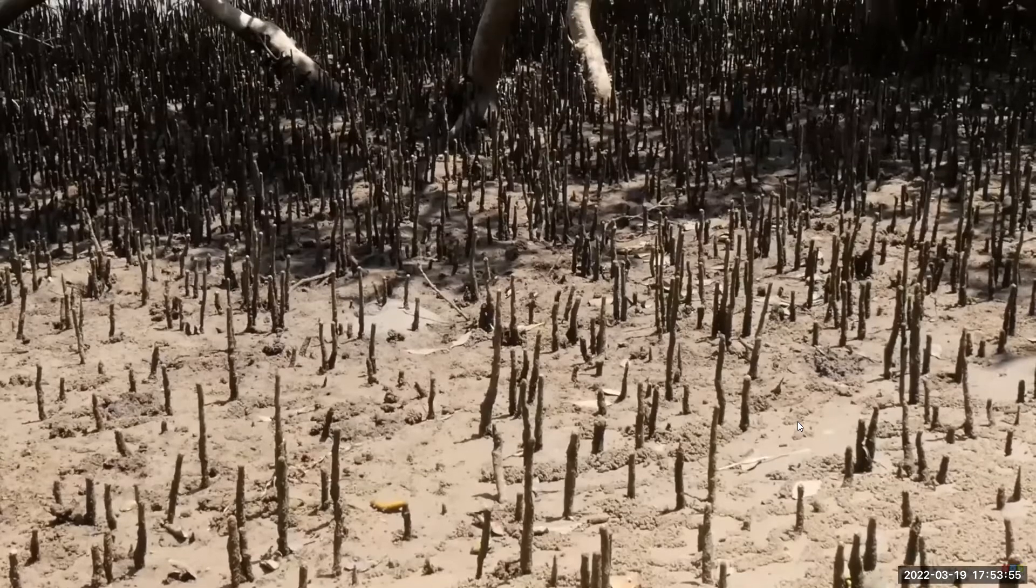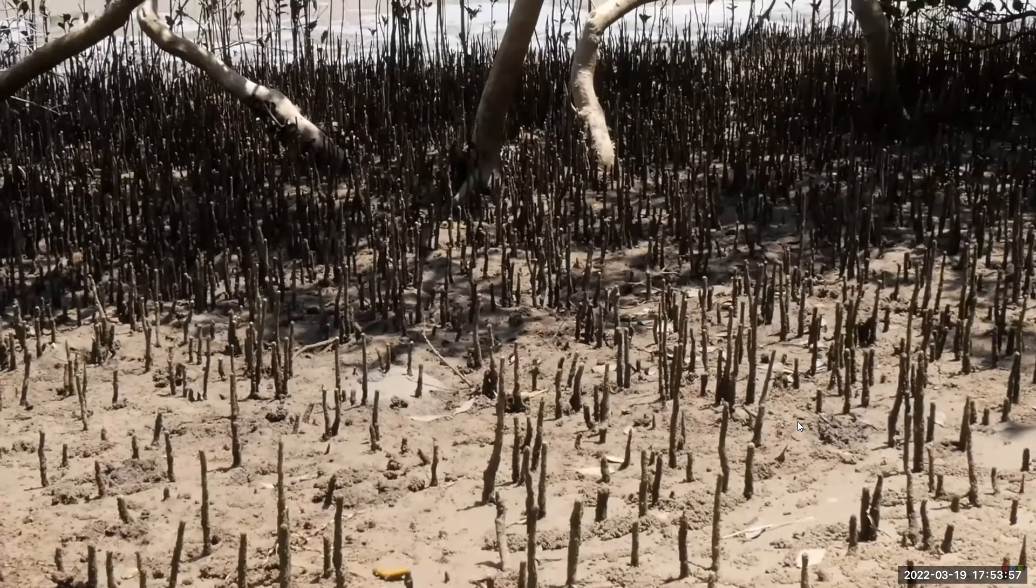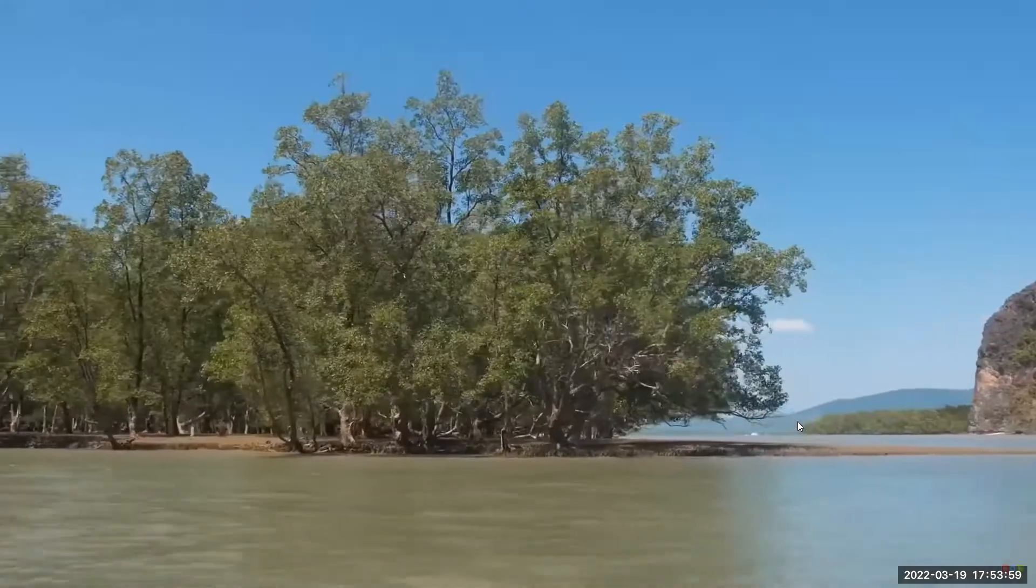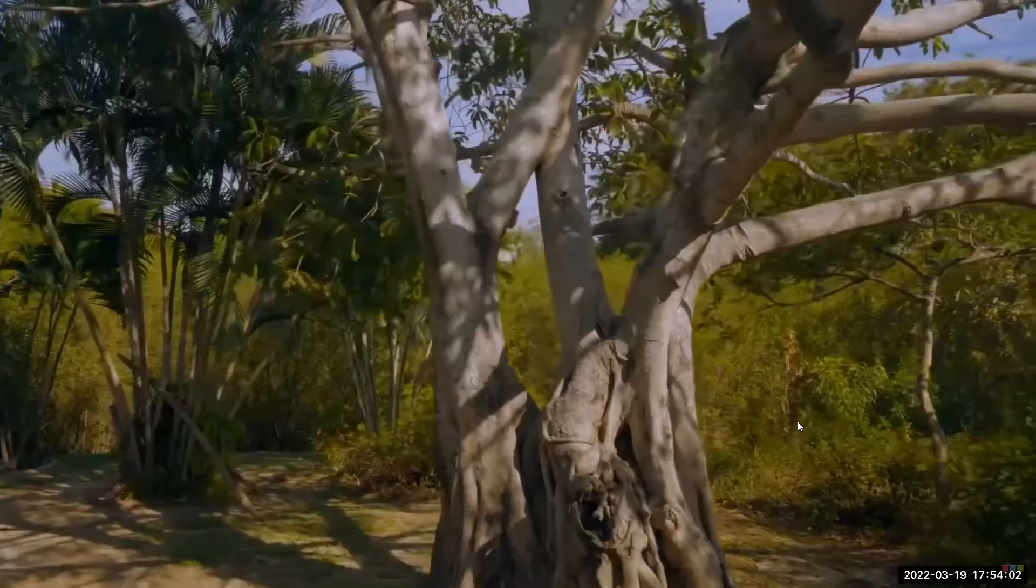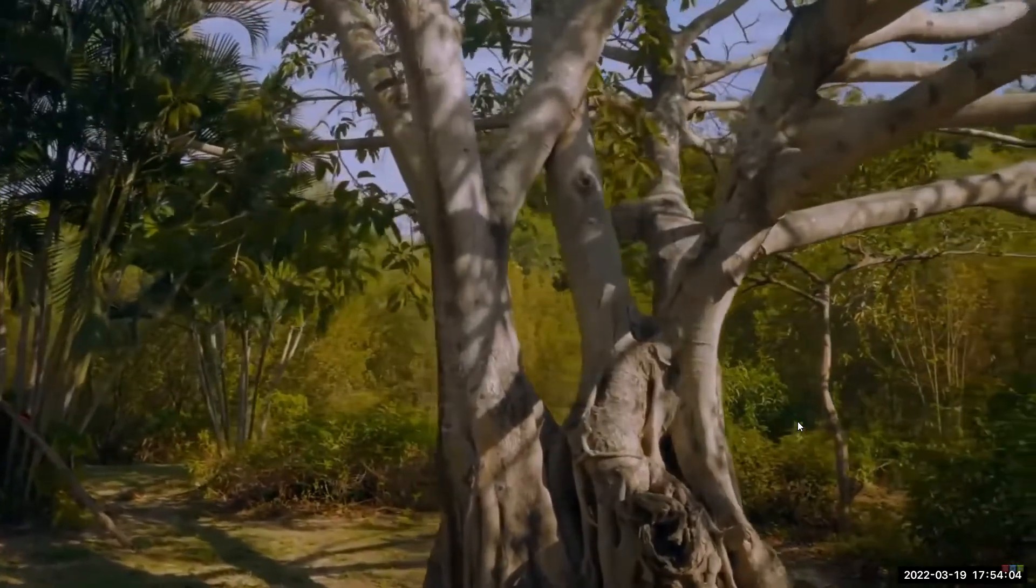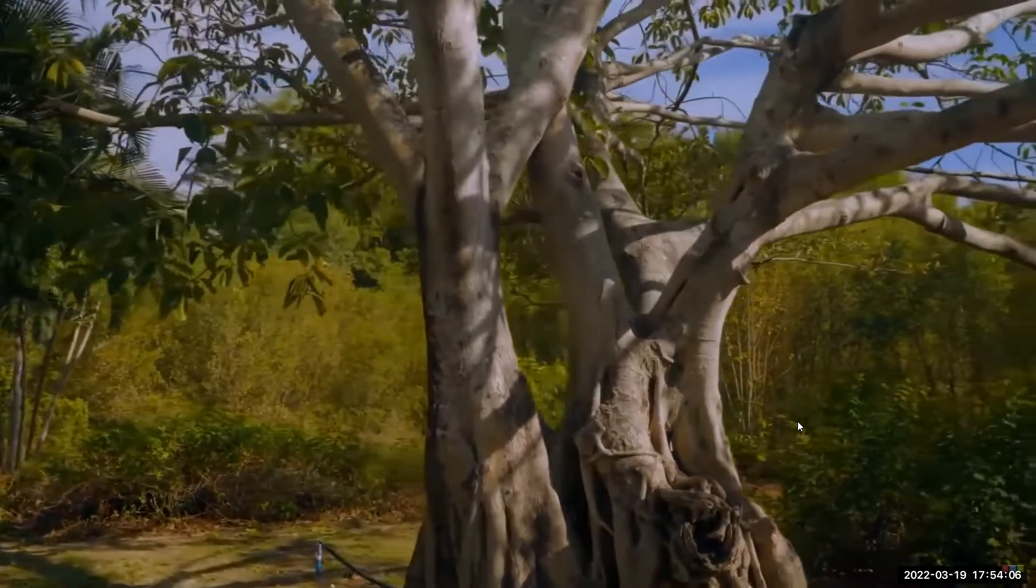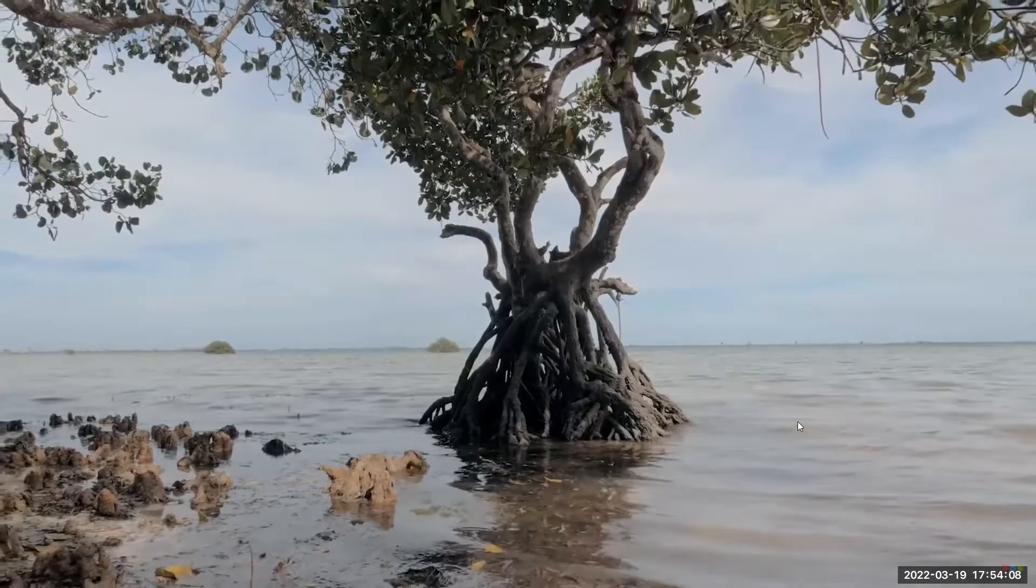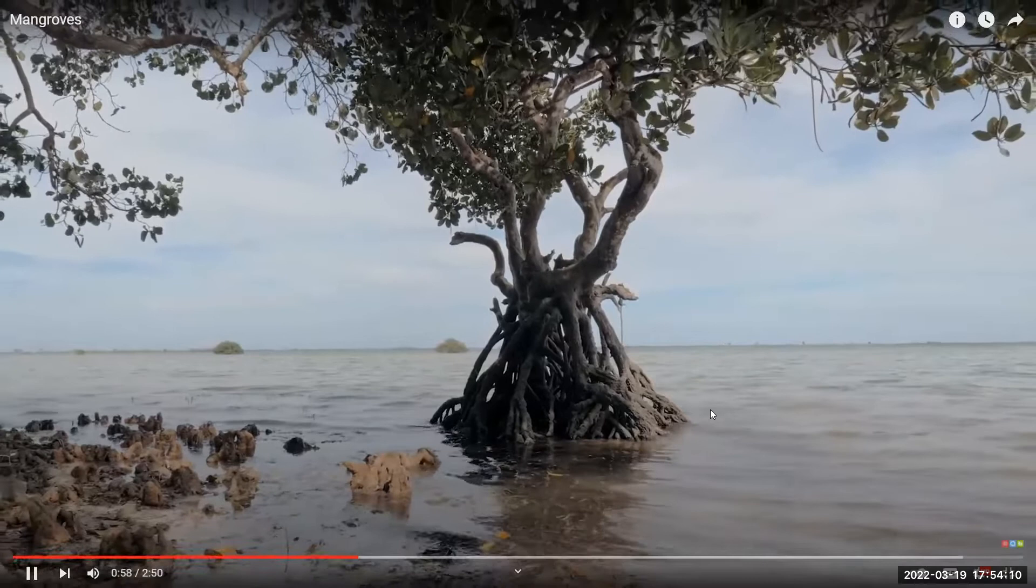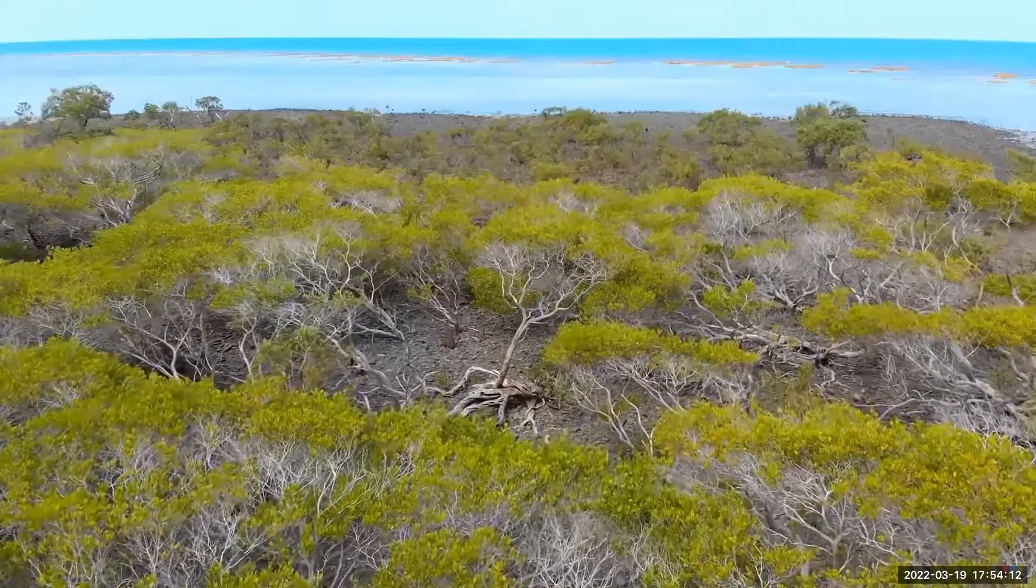The soil in which mangroves grow is soft and low in oxygen. To survive in such soil, many mangroves have stilt roots that prop up the plant and prevent the shoot system from being submerged during high tides.